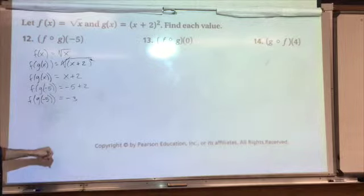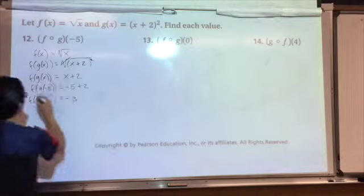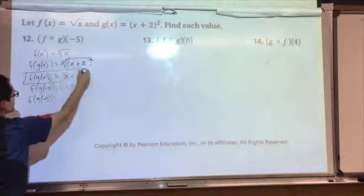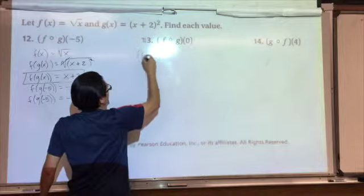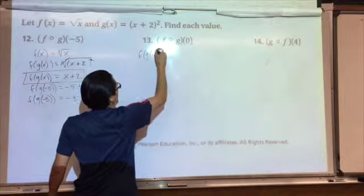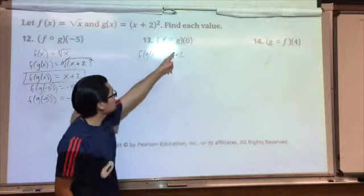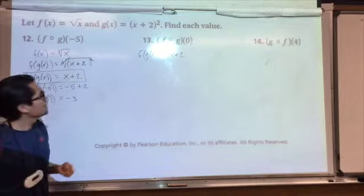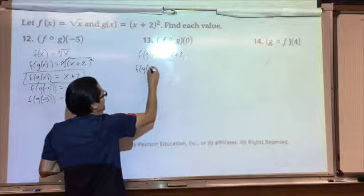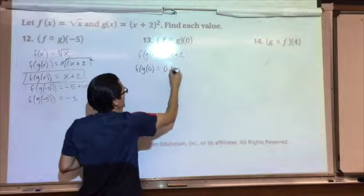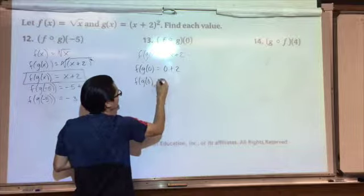Let's look at 13. Same composition, f with g — so I don't have to do this work again. I already did the composition of f and g: f of g of x is x plus 2. All I've got to do is plug in 0. f of g of 0 equals 0 plus 2, so f of g of 0 is 2.